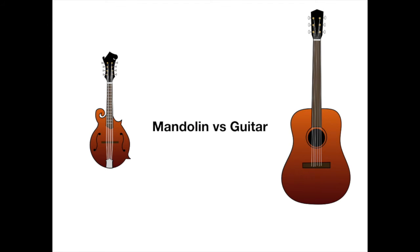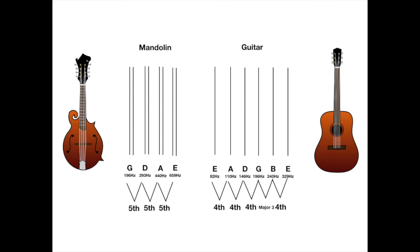So if you look at the mandolin's other cousin, the guitar, we'll see there are more differences. Mandolins are tuned to fifths and guitars are tuned to fourths with one major third thrown in there. You can also see from the frequencies that the deepest string on a mandolin is equal to the fourth deepest on a guitar.